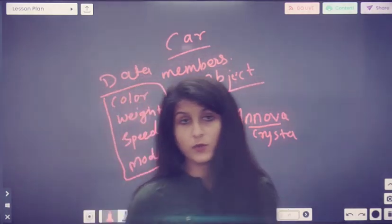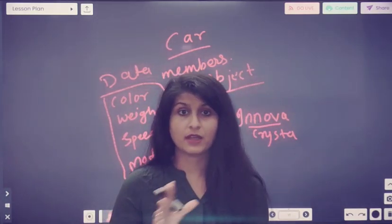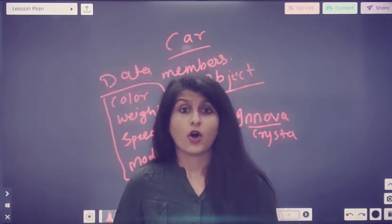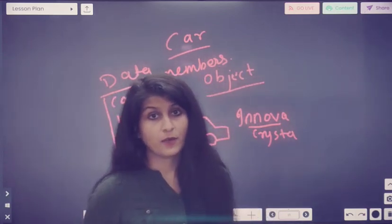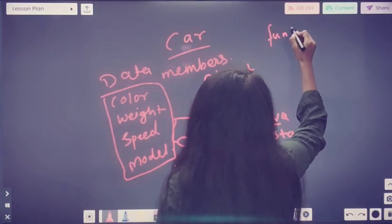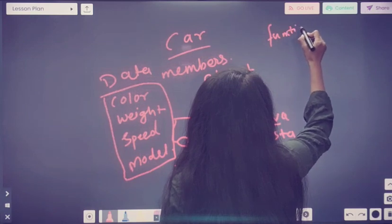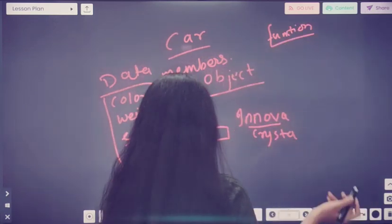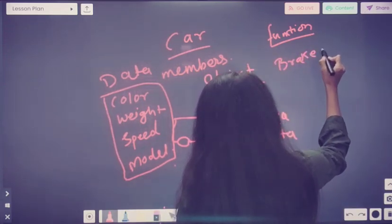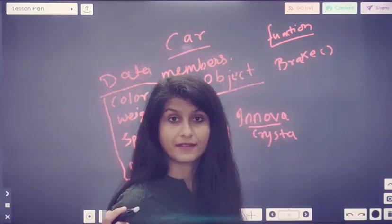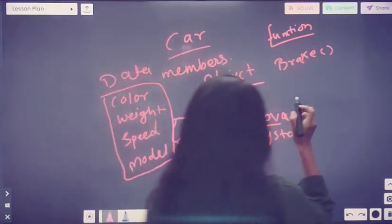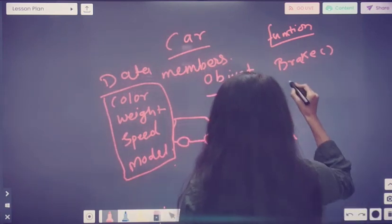Now let's talk about functions. We know that there are functions in every class and object as well. So let's see what functions are there in that object. When we talk about functions, there will be a brake function — we denote a function with parentheses. So the brake function will be there.